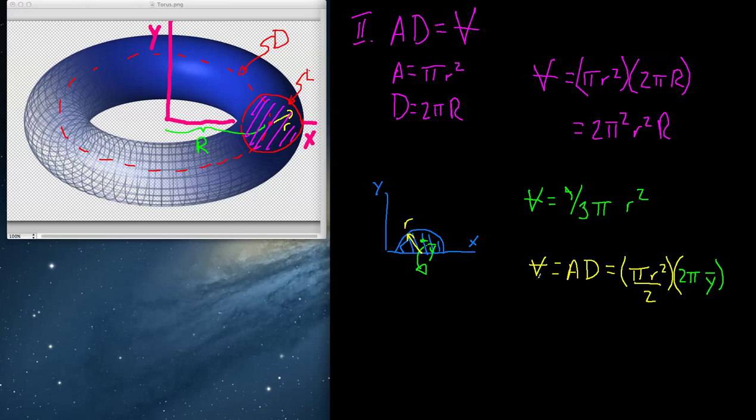So we know that 2 pi times whatever the centroid distance is, that's going to get us our answer. Well, fortunately, we know what the answer is. We know that the answer is 4 thirds pi r cubed.